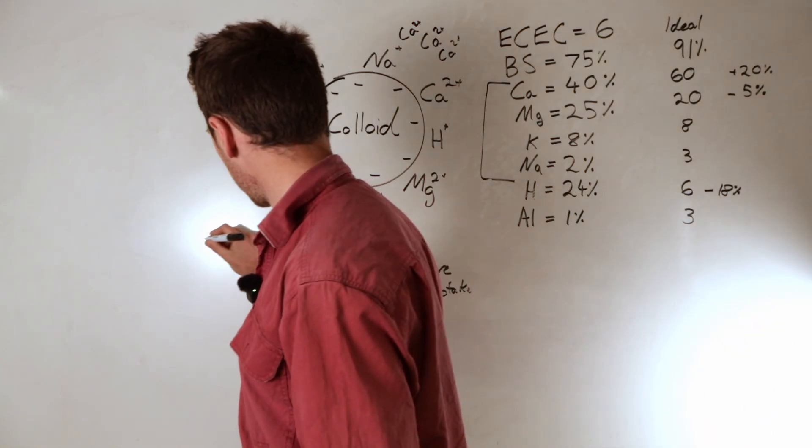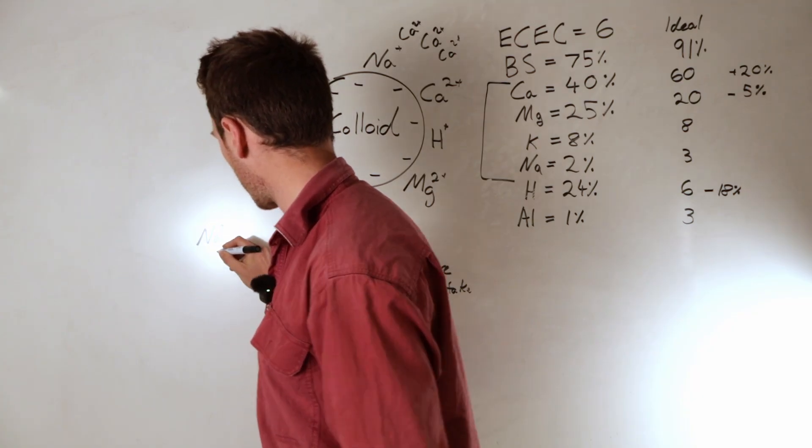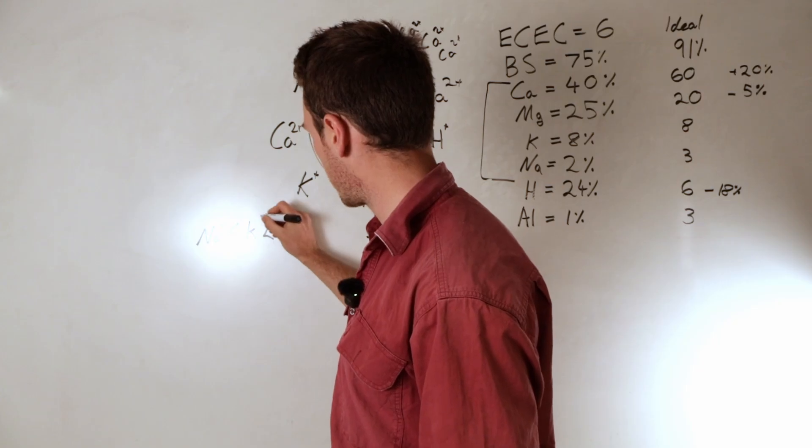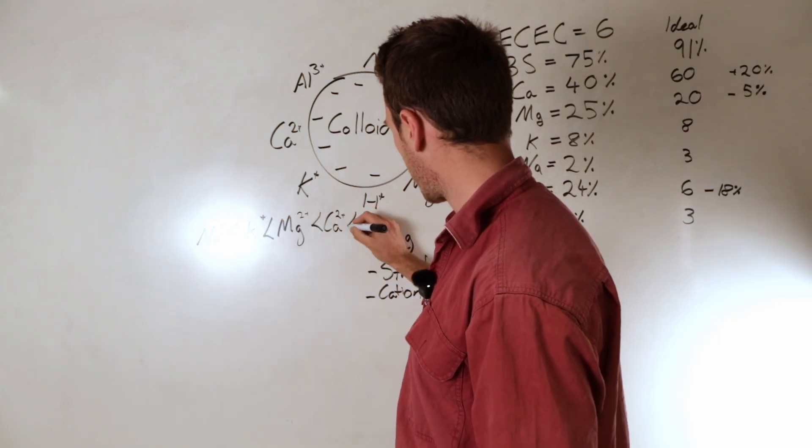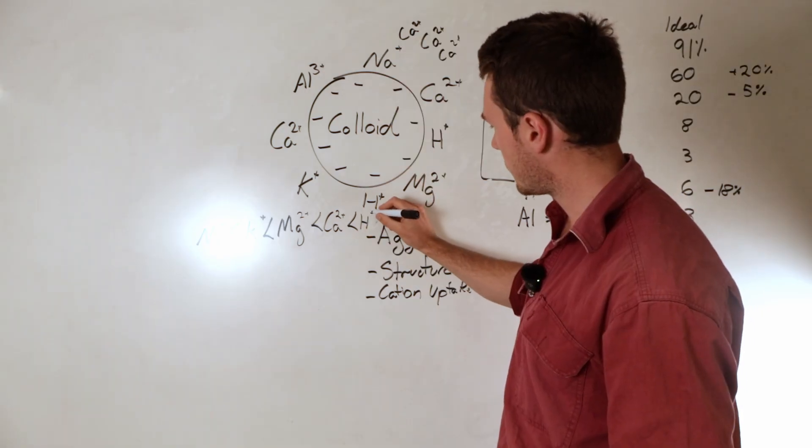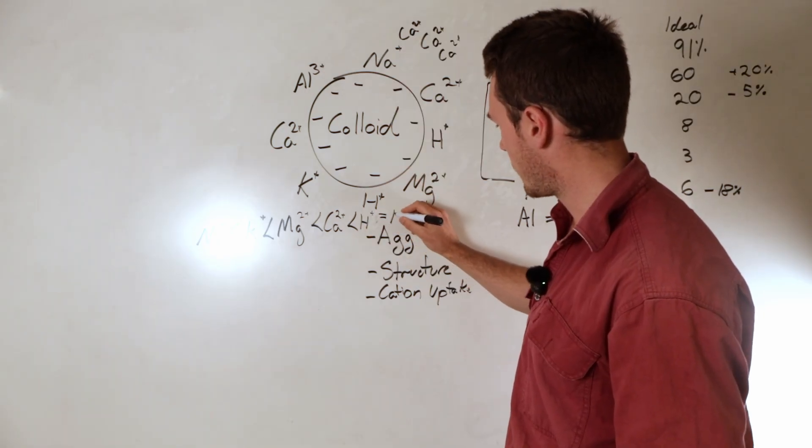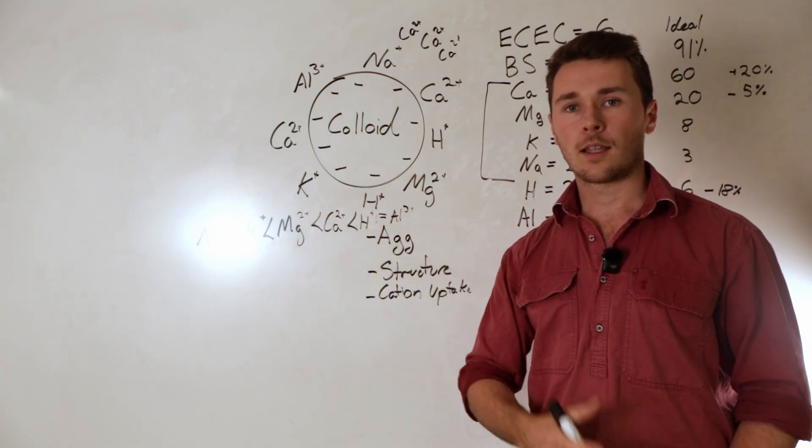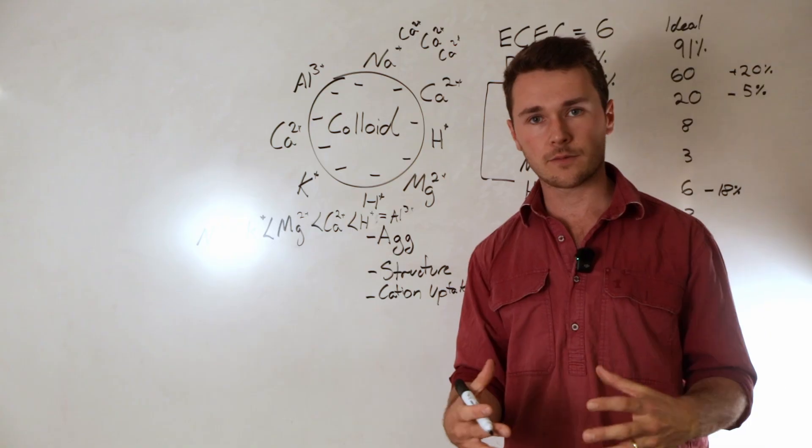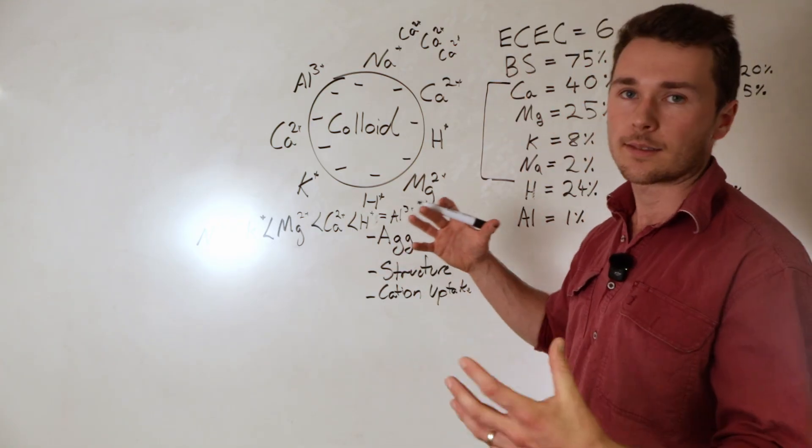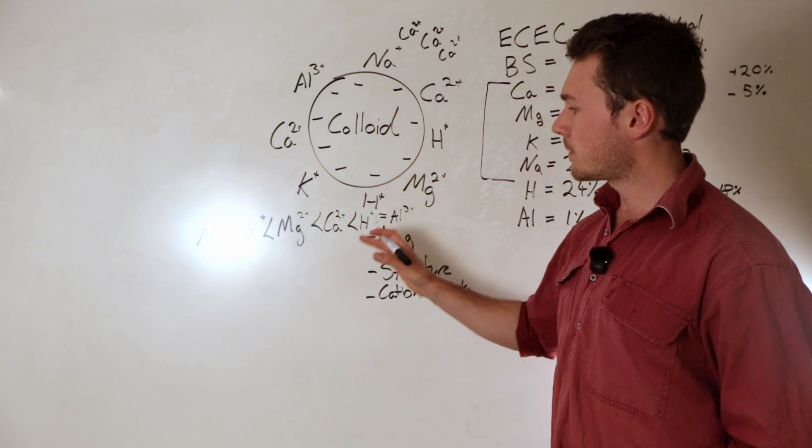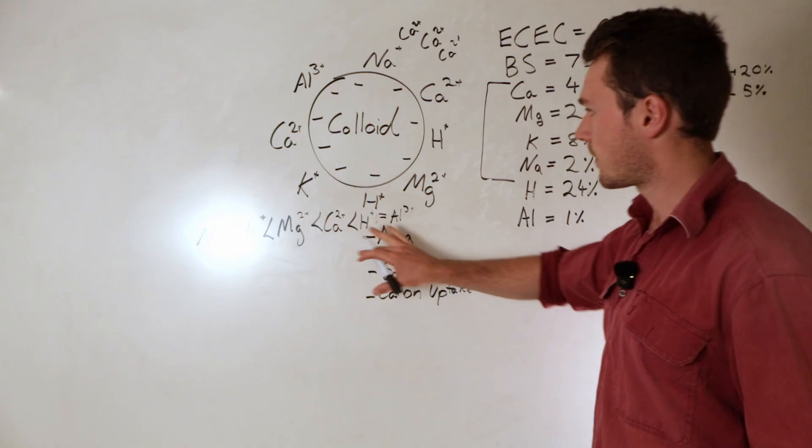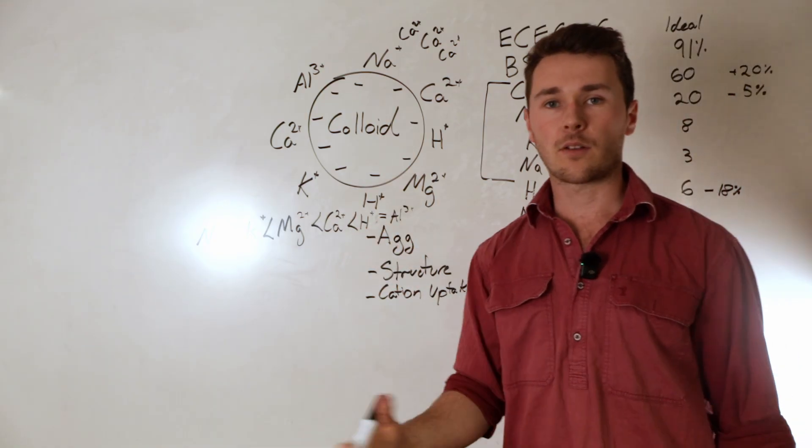At the weakest is sodium. So sodium gets pushed off first, and then it goes to potassium, and then it goes to magnesium, and then it goes to calcium. After that is hydrogen, and then hydrogen is relatively equal to aluminum. This is all relative to the charge that these have on clay colloid, so their attractive force, their electrostatic force, and the size of the cation. This means that if we apply calcium, it's more likely that it will knock off any of these things than some of these other ones.